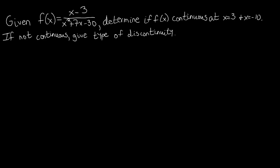In this video we're going to begin discussing continuity at a point. For this problem we're given a function represented by a rational function, and we're asked to determine if f(x) is continuous at both x=3 and x=-10. We're going to analyze each of those individually.